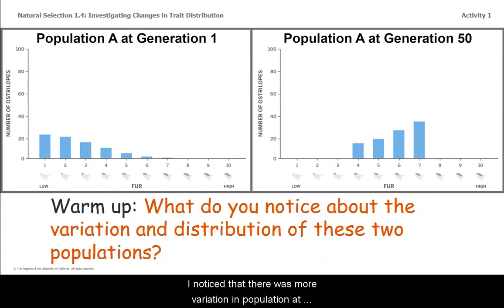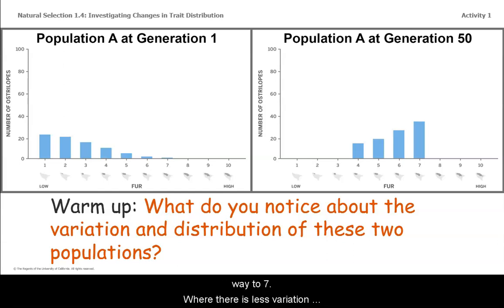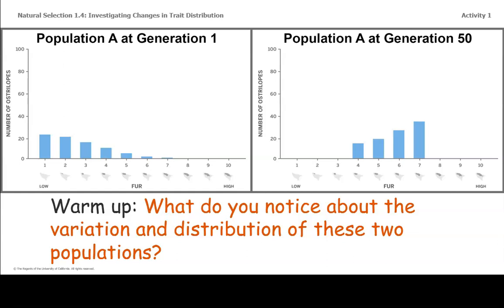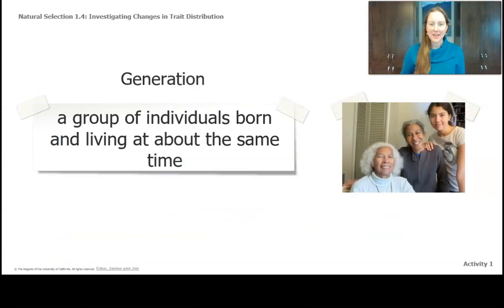I also noticed there was more variation in Population A at generation one — it went from fur level one all the way to seven. There is less variation at generation 50, because only levels four through seven are present. What else did you notice?